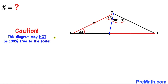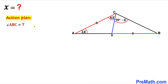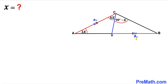Please keep in mind that this figure may not be 100% true to scale. Our action plan: we must first find angle ABC. We know that side length AC is congruent to side length BD. Let's call this side length lowercase a, so BD is lowercase a as well, and let's label side length CD as lowercase b.